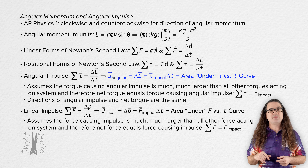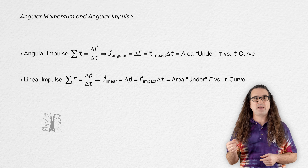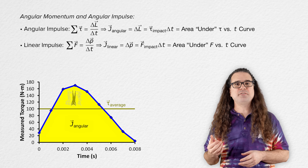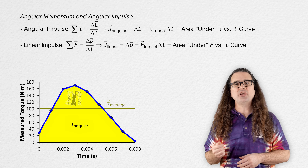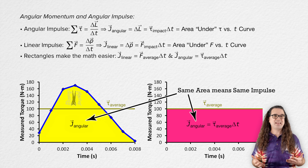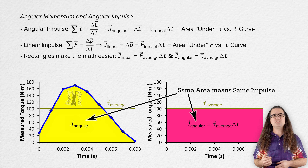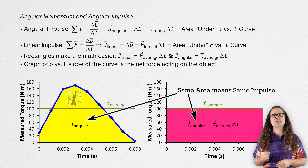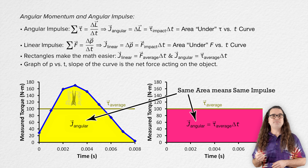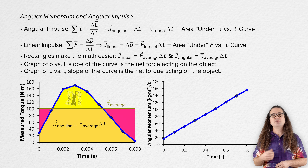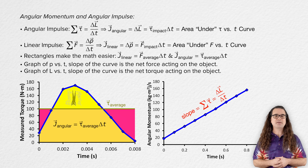When given an impact force or impact torque as a function of time graph, it is not unusual to use the average impact force or average impact torque and change in time to determine the impulse, because that makes the area into a rectangle and is generally much easier mathematically. On a graph of angular momentum as a function of time, the slope of the curve is the net torque acting on the object.